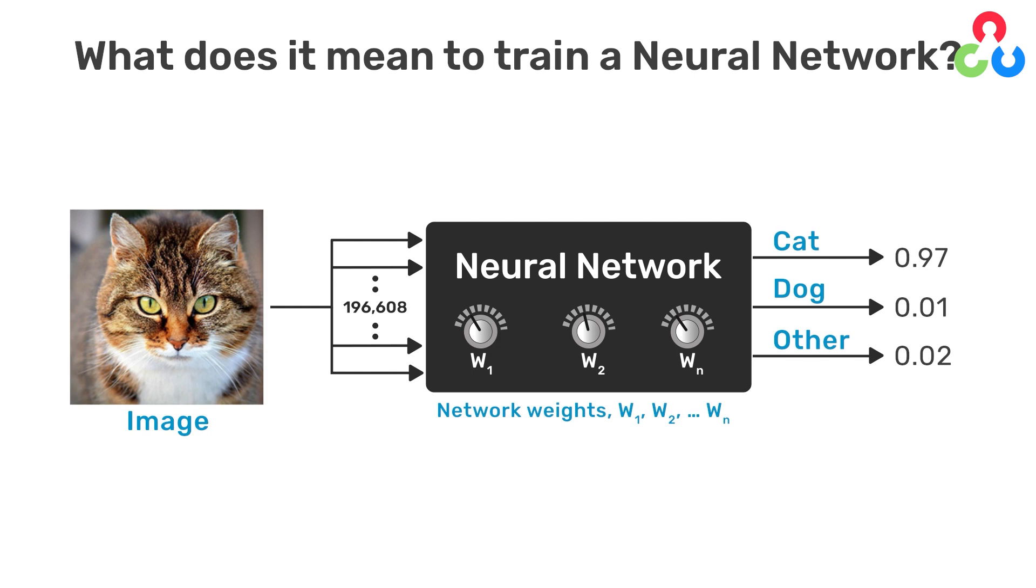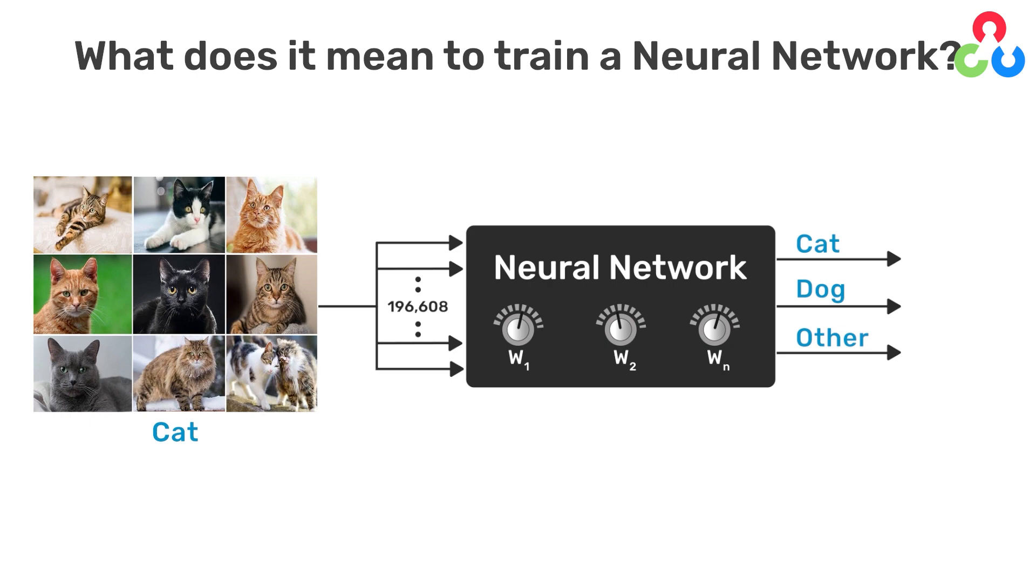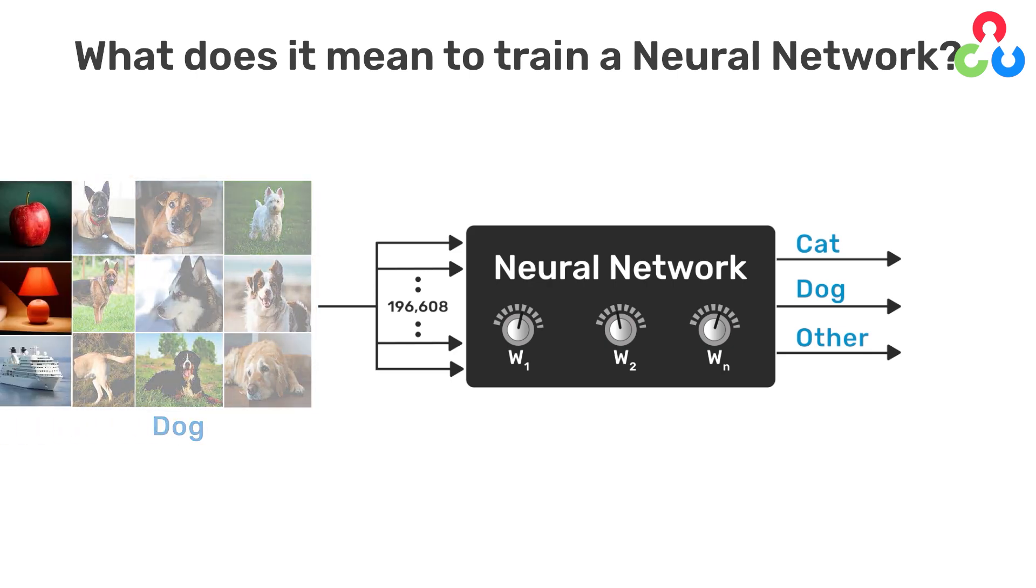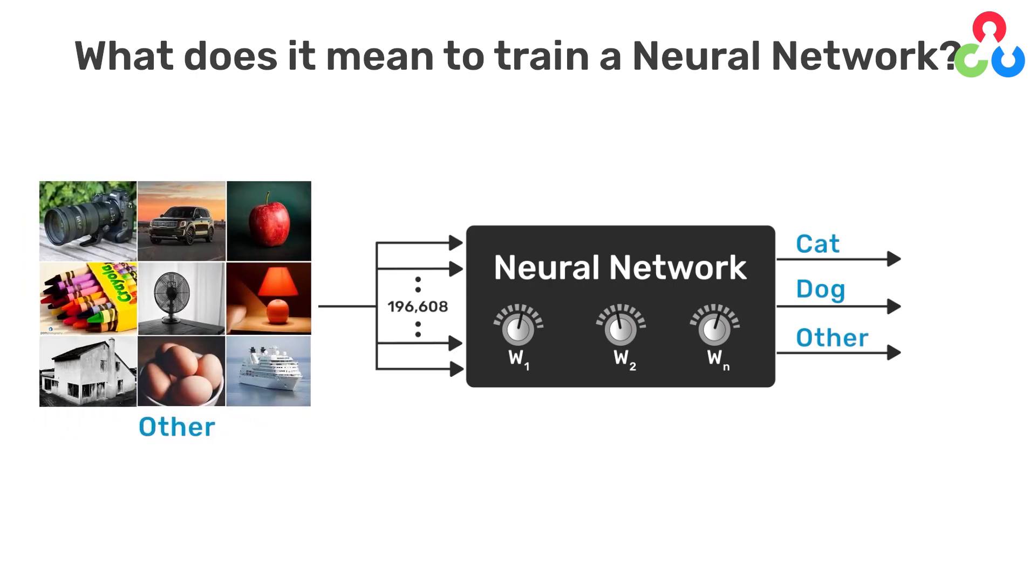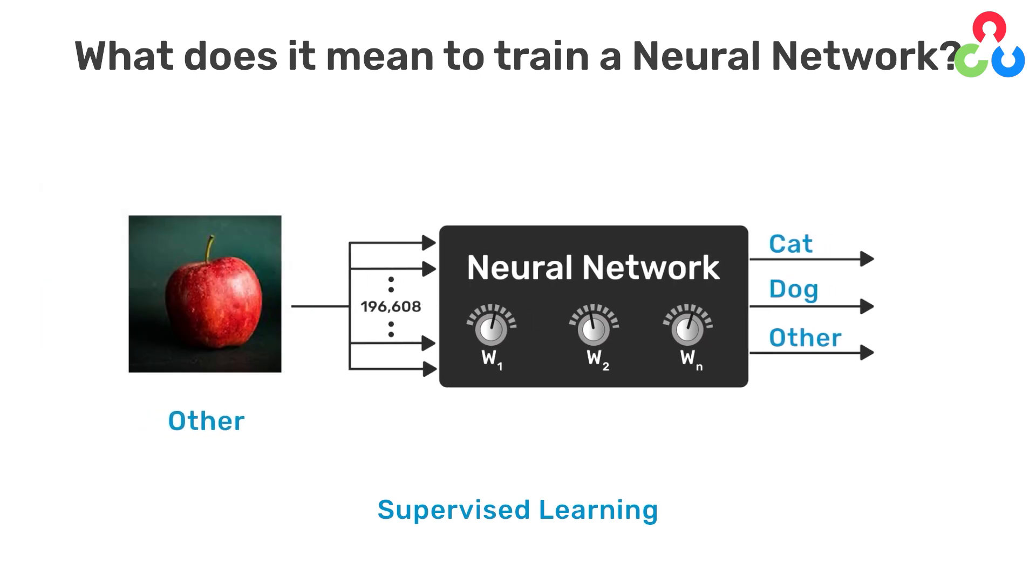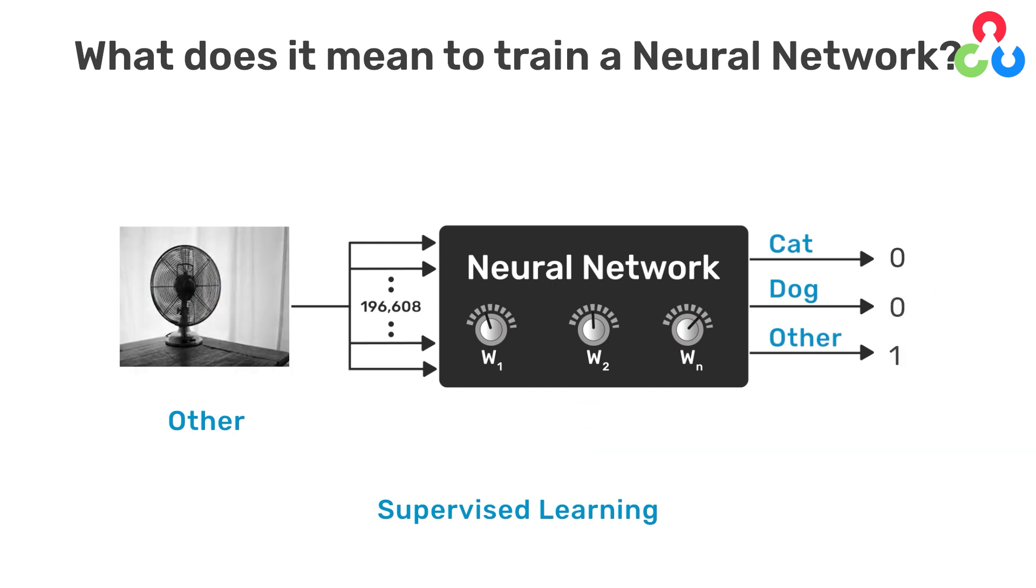When you train a neural network, you need to show it several thousand examples of various classes that you want it to learn. For example, images of cats, images of dogs, and images of other types of objects. This kind of training is called supervised learning because you're providing the neural network with an image of a class and explicitly telling it that it's an image from that class. If the network makes an incorrect prediction, we compute an error associated with the incorrect prediction, and that error is used to adjust the weights in the network so that the accuracy of subsequent predictions are improved.